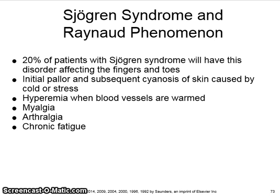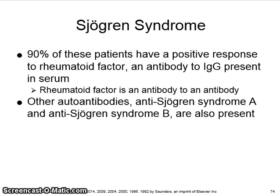Twenty percent of patients with Sjogren's syndrome will have this disorder. Ninety percent of Sjogren's patients have a positive response to rheumatoid factor, an antibody to IgG present in serum. Rheumatoid factor is an antibody to an antibody. Other auto-antibodies — anti-Sjogren's syndrome A (anti-SSA) and anti-Sjogren's syndrome B (anti-SSB) — are also present.